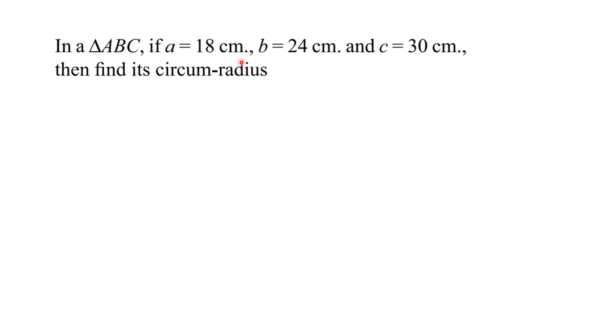Our problem is this triangle ABC. If a equals 18 cm, b equals 24 cm, and c equals 30 cm, then we will find its circum-radius.